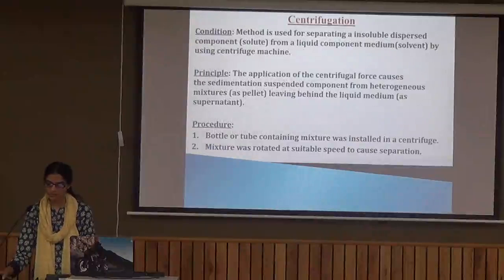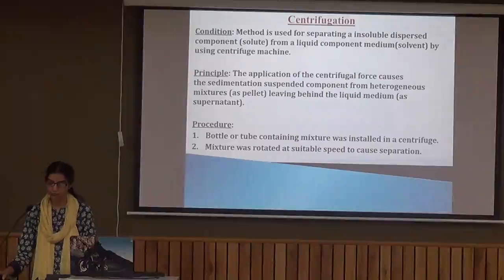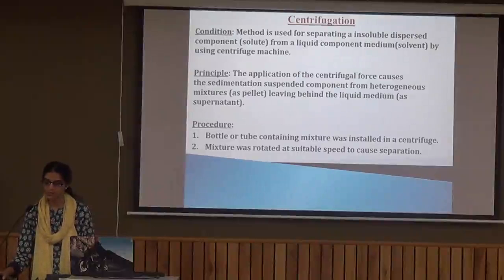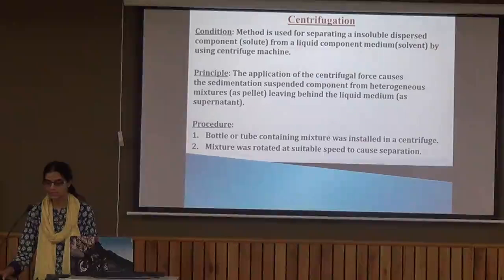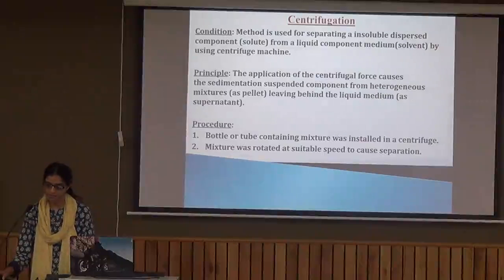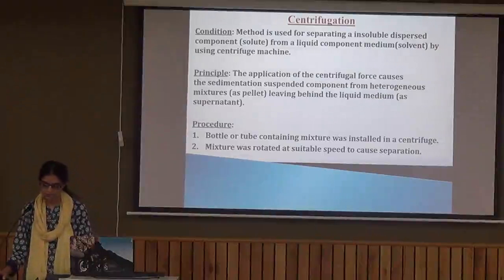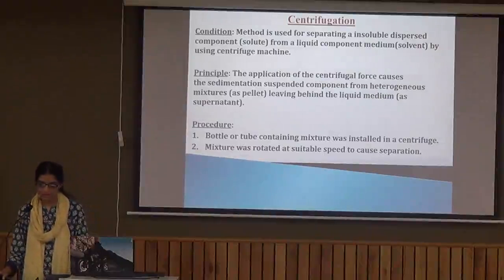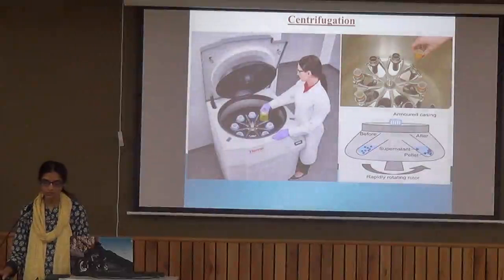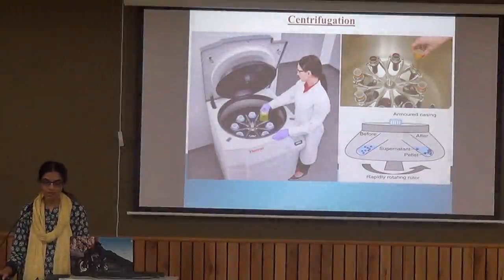The next technique is centrifugation. It was done physically in earlier days but now it is done by machines called a centrifuge machine. The basic principle involved in centrifugation is that we are able to separate the heavier particles from the lighter particles. It is basically used for separation of cream from milk, the components of blood, and also for drying clothes in a washing machine dryer.